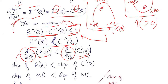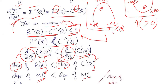Each derivative can be written as a slope. The first order derivative of the revenue function is the slope of the marginal revenue curve, and the first order derivative of the cost function is the slope of the marginal cost curve. So we have developed the condition: the slope of marginal revenue should be less than the slope of the marginal cost function.